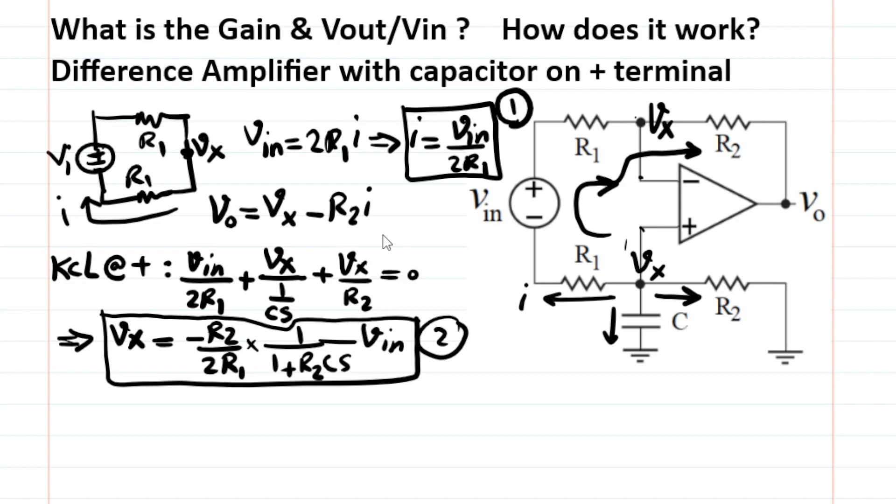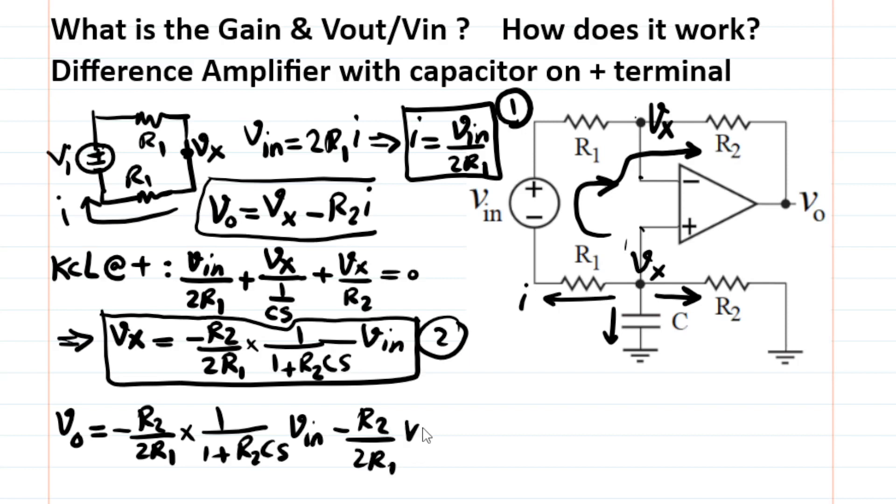I'm going to use this in what I got here, because the unknown is Vx. So let's use that in over here and figure out Vout. So Vout is now substituting for Vx using equation 2, is as simple as negative R2 over 2R1 times 1 over 1 plus R2 Cs times Vin. And then for I, I'm going to substitute from equation 1 here. So I get negative R2 over 2R1 times Vin. Negative R2 over 2R1 times Vin. Very nice.